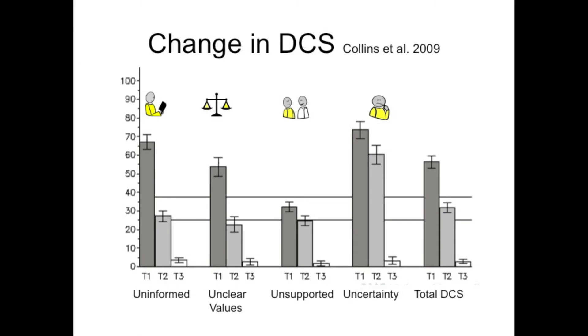The scale is responsive to change. This data shows high decisional conflict in Dale Collins' population of breast cancer patients at time one, time two, and time three. People feel uninformed, unclear about values, unsupported, and have high uncertainty. After using a decision aid, those scores decline — people start feeling more comfortable with their decision process. But the dramatic drop only happens after they've talked to the clinician. So clinicians can be reassured they have a role in decision support; sending someone a decision aid doesn't close the loop.